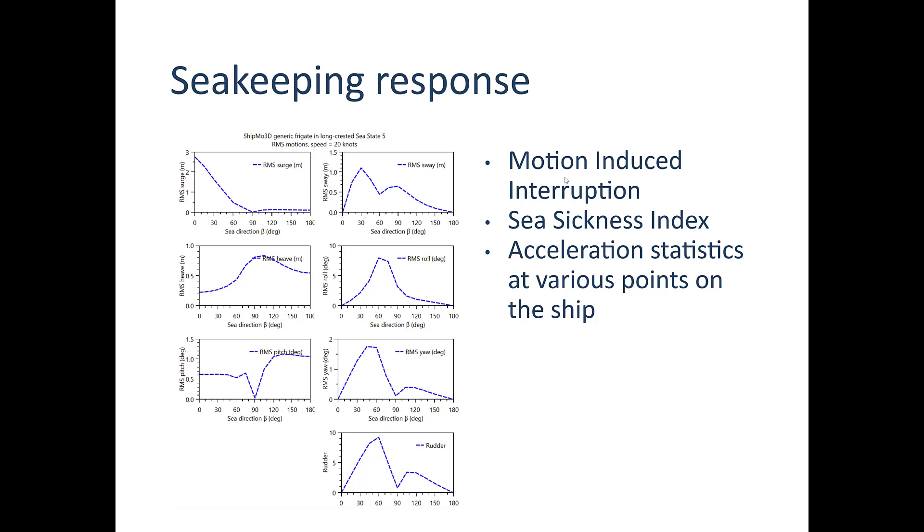But also, things like motion induced interruption and seasickness index, and acceleration statistics can be computed at various points on the ship. They give an idea of just how bad the motion is, whether or not people can work, or are likely to be able to work, or if there's going to be potential for accidents. And a seasickness index, of course, gives an idea of the comfort level for people on the ship.